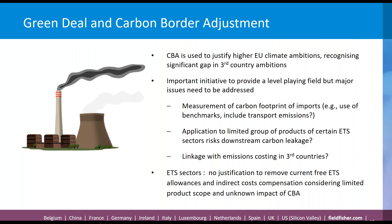There is also the position of sectors currently in the ETS who are benefiting from free allowances and indirect cost compensation. They have an issue with the Commission saying the carbon border adjustment mechanism would replace the current carbon leakage measures — those free allowances and indirect cost compensation. These sectors are essentially saying there's no justification to remove the current carbon leakage measures, considering that the carbon border adjustment mechanism will have a very limited product scope. At this point, because we don't know the concrete design of the CBA, we don't know what the impact will be to limit carbon leakage in practice.